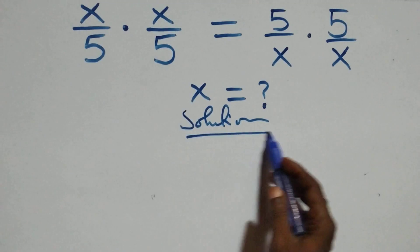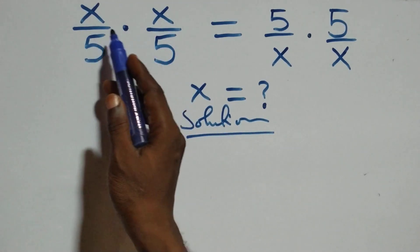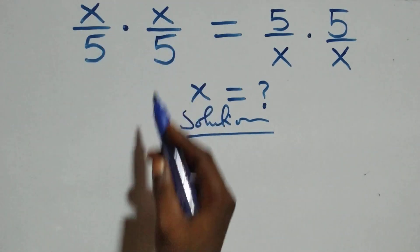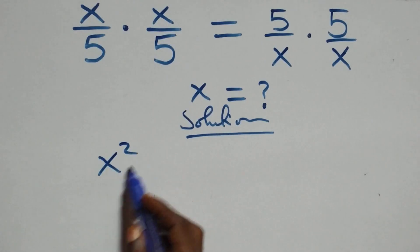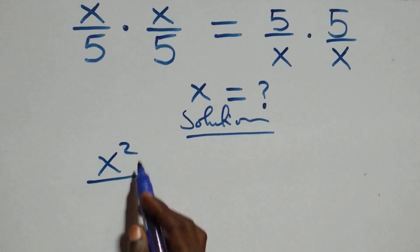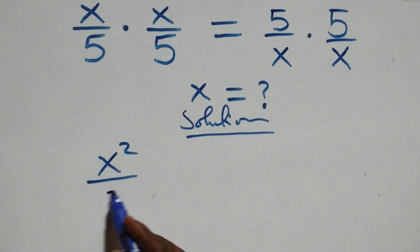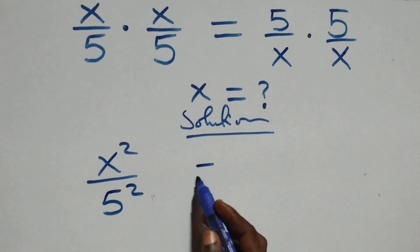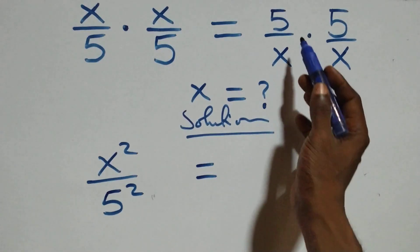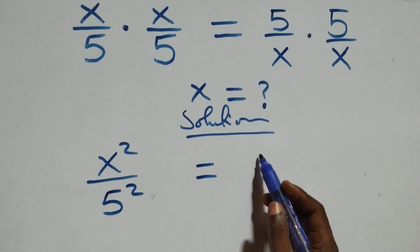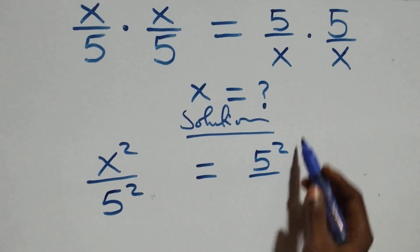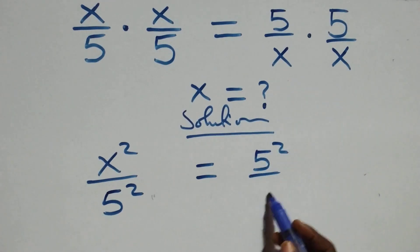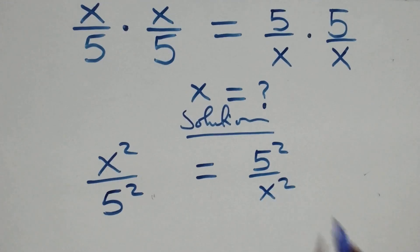From what we have here, we can multiply directly: x times x written as x squared, and also 5 times 5 written as 5 squared, equals to on this side as well 5 times 5, that's 5 squared, then over x times x, which is x squared.